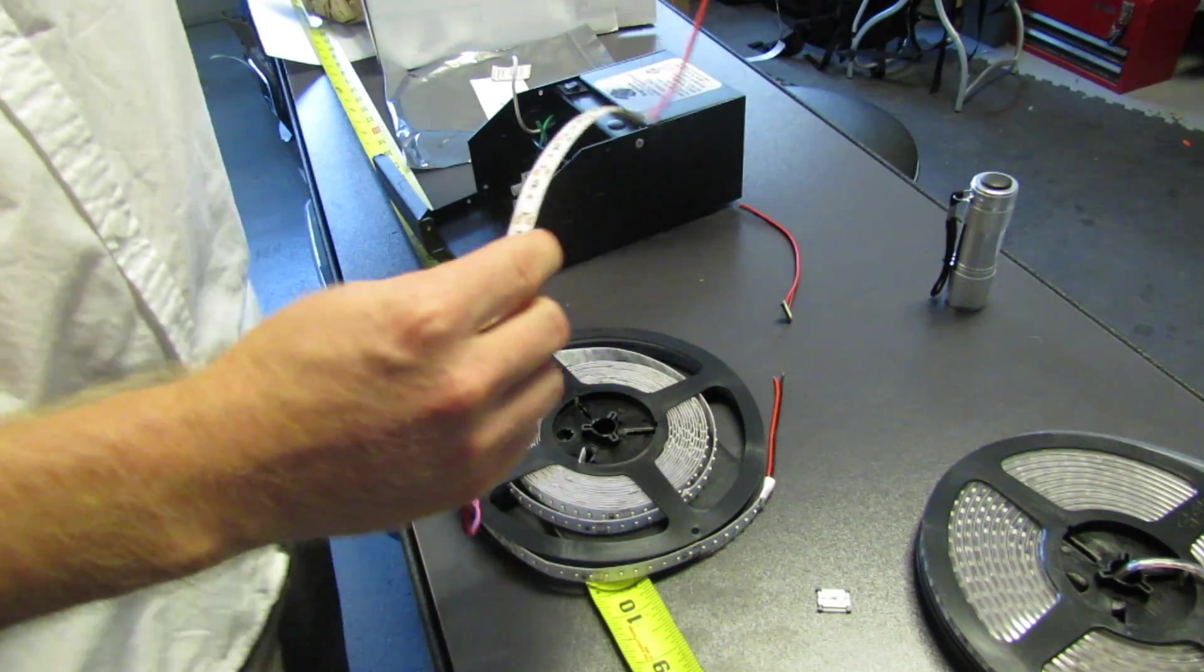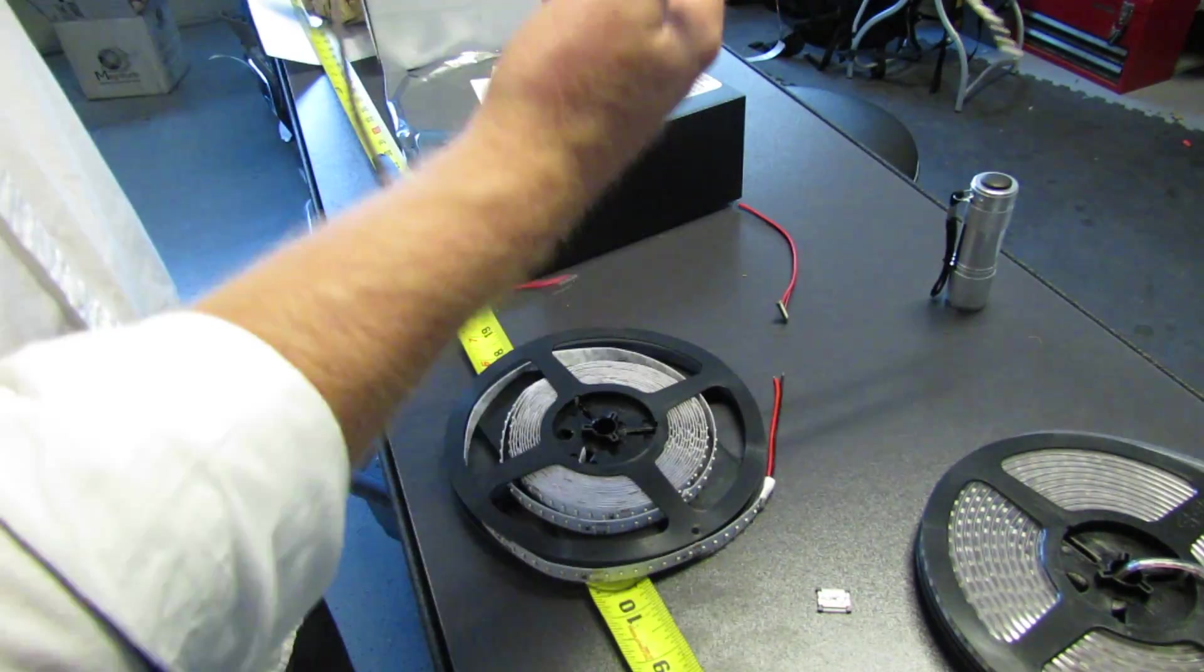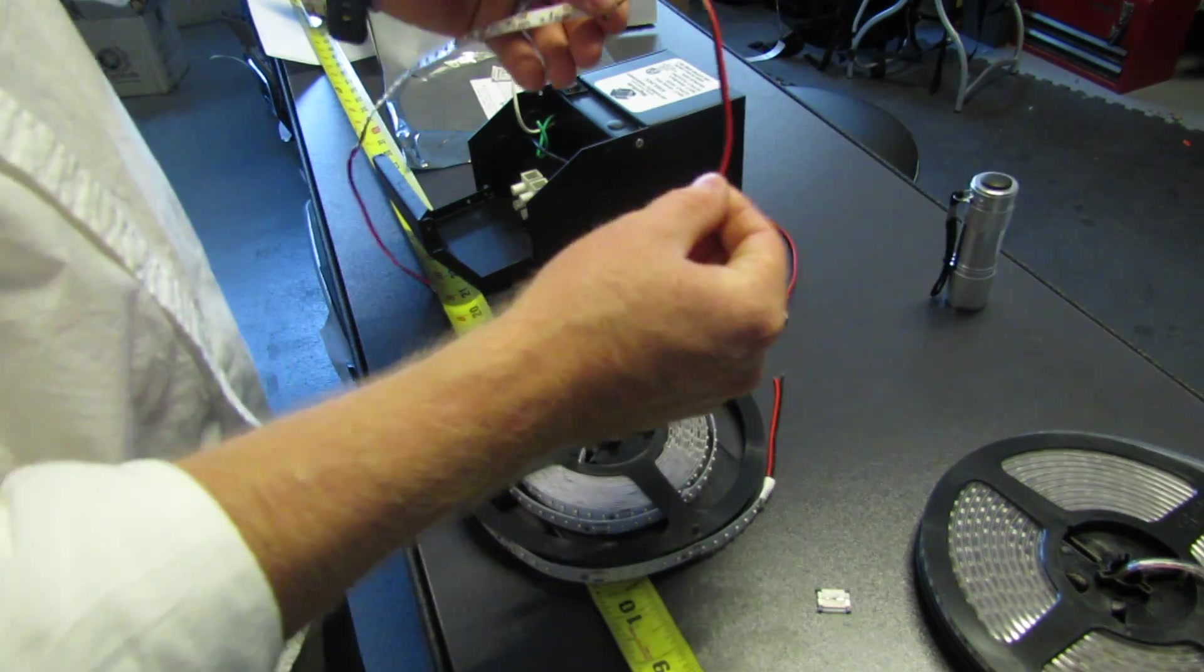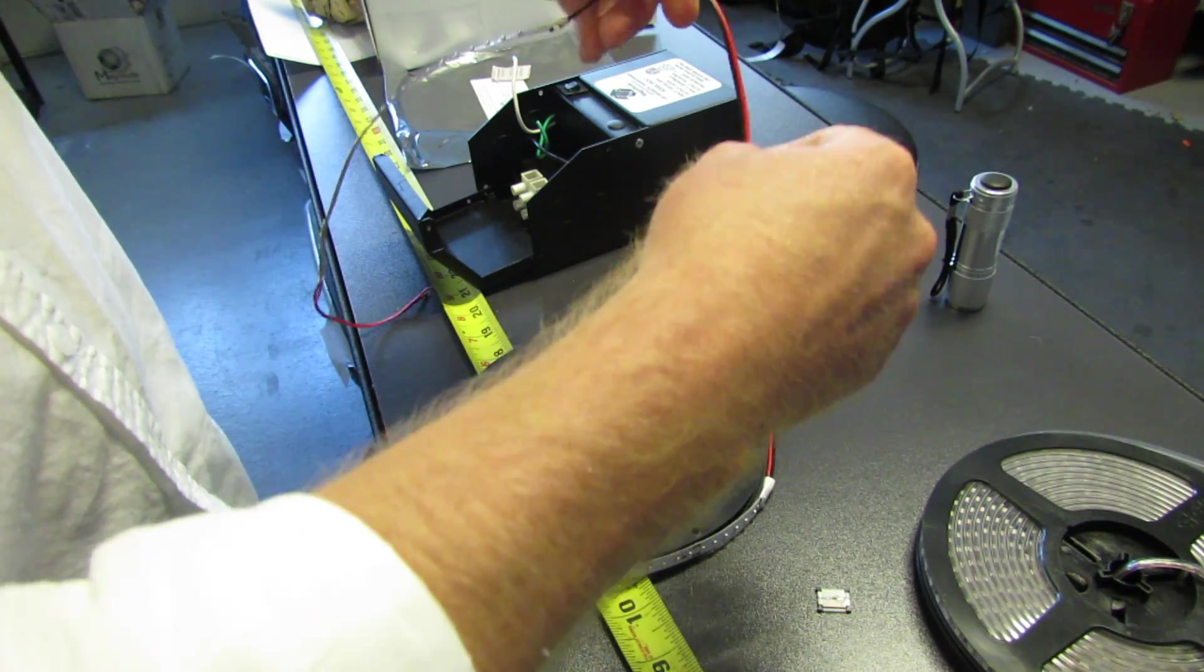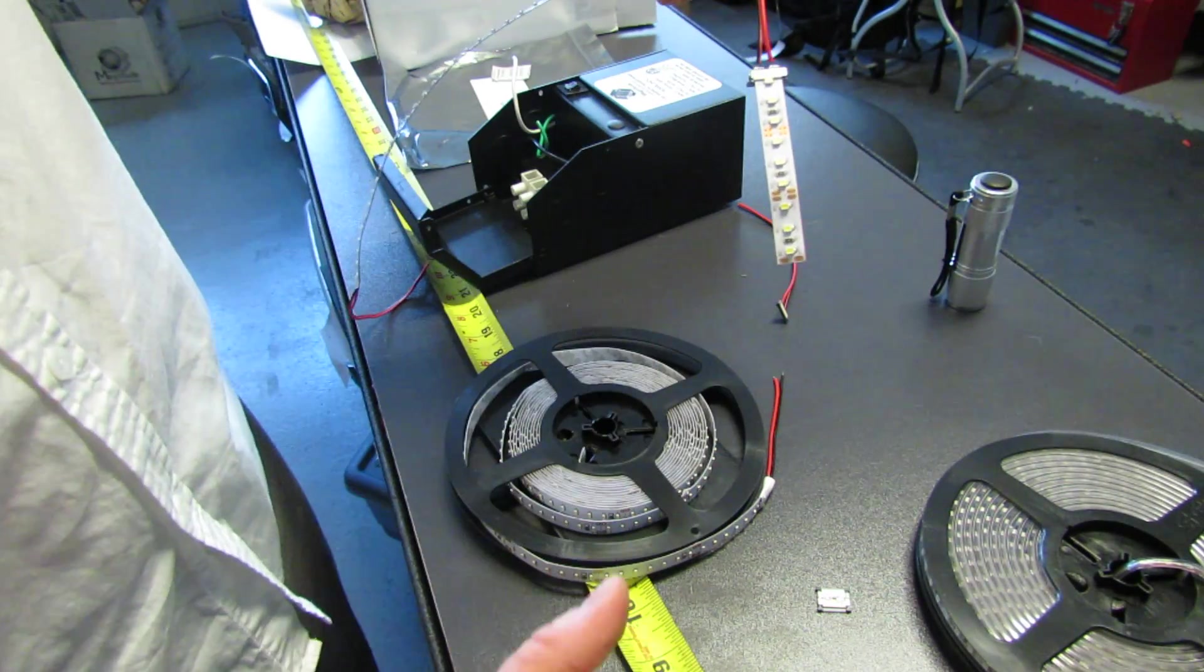Now we have, in essence, imagine this is five meters of strip here and then we come to a turn in the cove lighting or whatever, in a corner and we have another strip going this way.